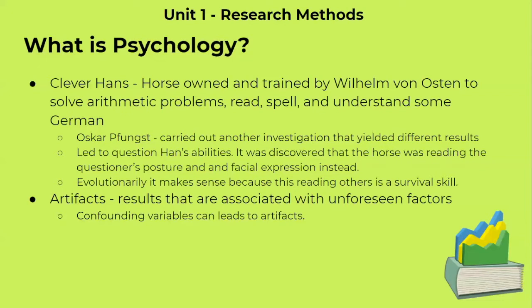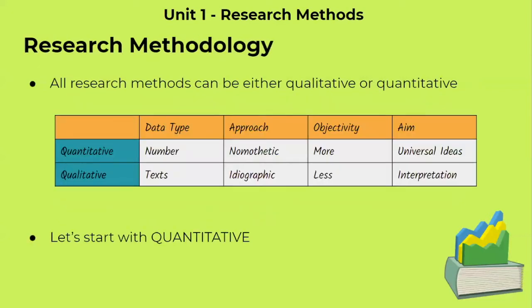This led people to think Hans was solving the problems, but it was actually a result of the questioner's posture and facial expression. Artifacts are results associated with the effects of unforeseen factors, and confounding variables can lead to artifacts. In the Clever Hans study, the confounding variable was the questioner's posture and facial expression, which was not taken into account. Now let's get into actual research methodology — all methods can be categorized as qualitative or quantitative.